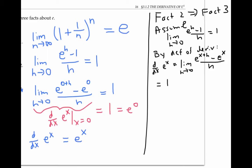If I factor out an e to the x from both terms on the numerator, I get the limit of e to the x times e to the h minus 1 over h. Notice that e to the x times e to the h is e to the x plus h by the exponent rules.